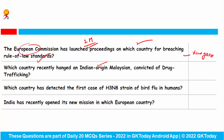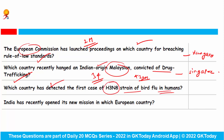Which country recently hanged an Indian-origin Malaysian convicted of drug trafficking? A 34-year-old Indian-origin Malaysian convicted of smuggling at least 42 grams of heroin into Singapore was hanged, after multiple legal challenges and appeals on grounds of intellectual disability failed. Singapore officials defended the decision, stating that the death penalty is a deterrent against drug trafficking. Which country has detected the first case of H3N8 strain of bird flu in humans? This strain has been detected in humans for the very first time in China's Henan province. This type of virus can circulate in birds and horses, and can also be detected in ducks.